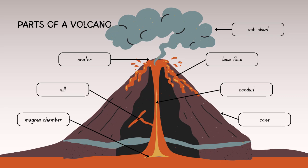The cone of a volcano is the three-dimensional structure that forms as a result of accumulated volcanic materials — such as lava, ash, and debris — around the vent. It gives the volcano its characteristic shape. Different types of cones include stratovolcanoes, shield volcanoes, and cinder cone volcanoes, which we will learn about in the upcoming slides.